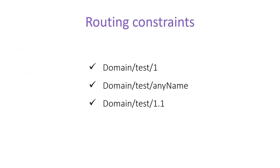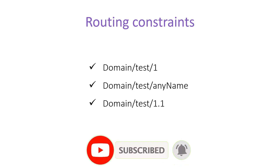Now let's understand a few more routing examples. If you have given any interview for ASP.NET Core MVC, you must have encountered this question. The scenario is: given a domain followed by 'test', if you pass an integer you get one output; if you pass a string you get another output; and if you pass 1.1 (a decimal) you get yet another output. All you have to do is define the type for these parameters — integer for the first, string for the second, and decimal or float for the third. You need to create three routes for these three scenarios.